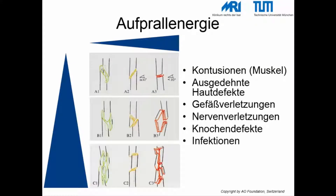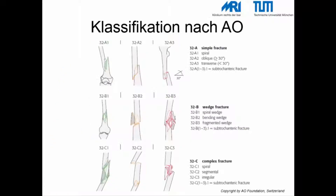Die Aufprallenergie hat ganz wesentlichen Einfluss auf zusätzliche Begleitverletzungen wie Muskelkontusionen, Hautdefekte, Gefäß-Nervenverletzungen oder die Ausbildung von Knochendefekten und Infektionen. Femurschaftfrakturen werden nach der AO mit der Ziffer 3.2 klassifiziert. Einfache Schaftfrakturen erhalten den Buchstaben A, komplexe Schaftfrakturen mit Keilfragmenten den Buchstaben B und Trümmer- oder Mehretagenfrakturen den Buchstaben C.